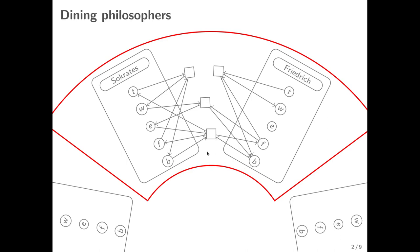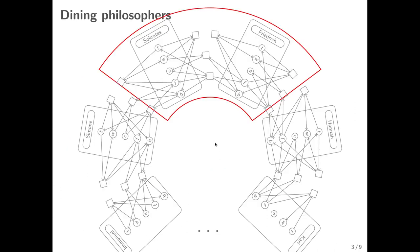Finally, once Socrates has finished eating, he returns to the thinking state while returning both forks — his own and Friedrich's. The parameterized aspect of this system is the size of the table, or the amount of philosophers that dine simultaneously.